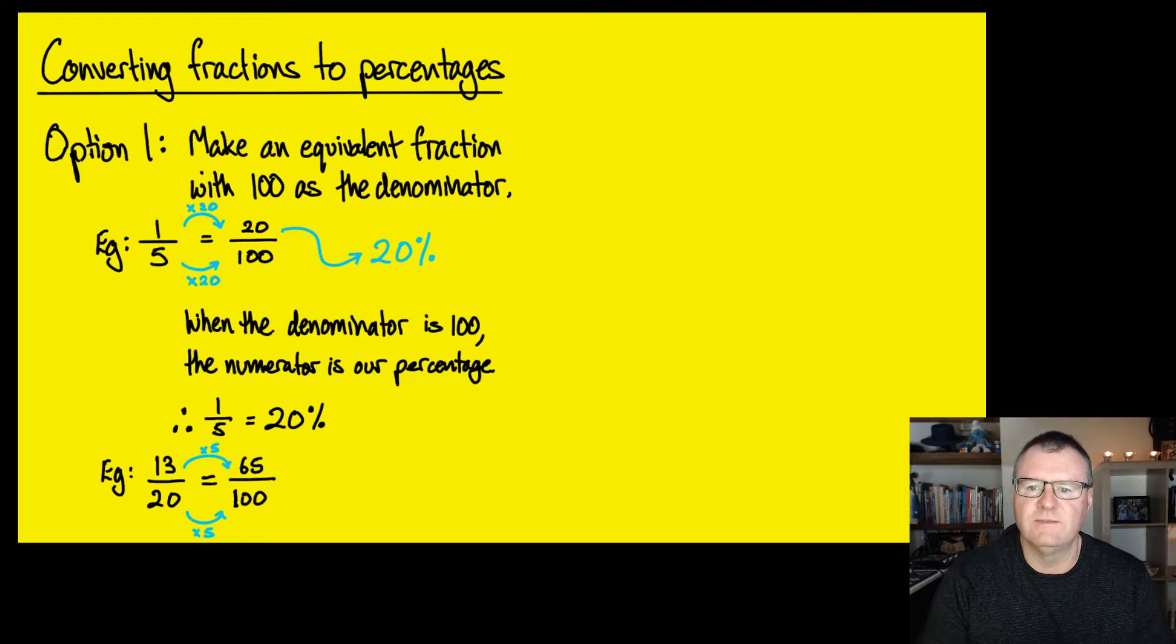So the number on top now, 65 over 100, is 65%. That's option 1.